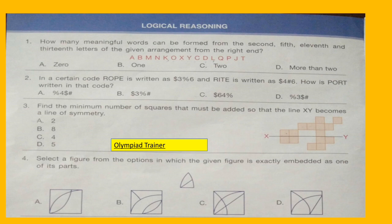The first part is Logical Reasoning. Question 1: How many meaningful words can be formed from the 2nd, 5th, 11th and 13th letters of the given arrangement from the right end? The letters are given and the options are A: 0, B: 1, C: 2, and D: more than 2.